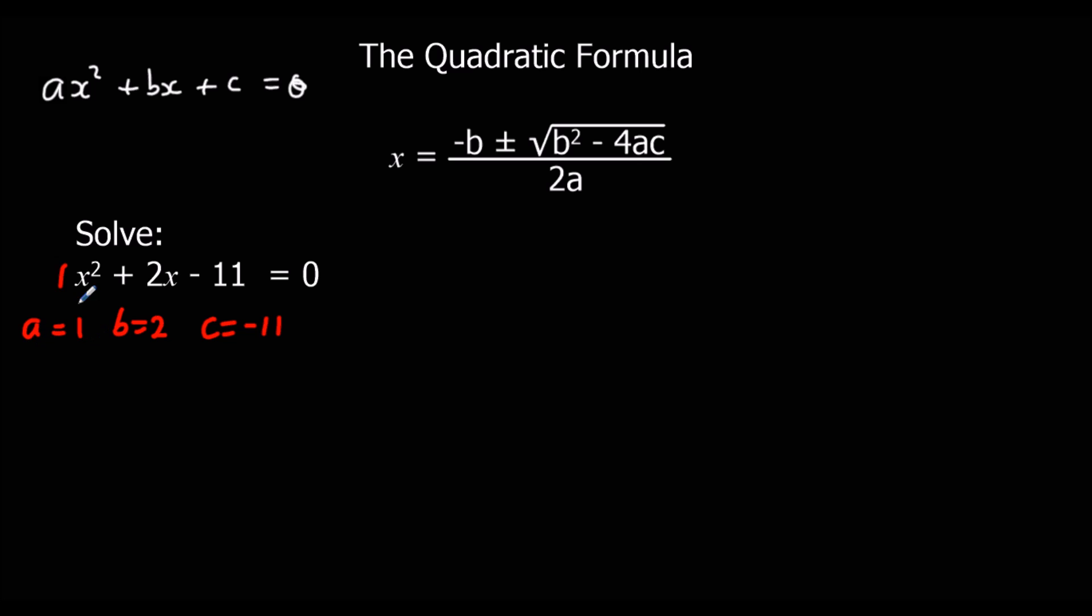So a in this example is 1, 1x squared. I've got 2x's, so b is 2, and the number by itself is minus 11. So that's a, b and c.